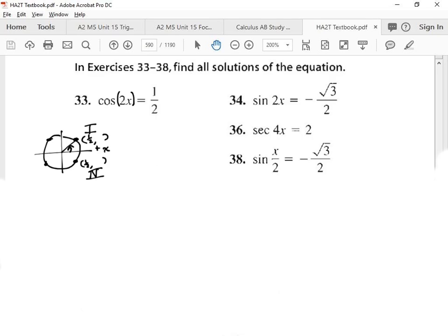Pi over 3. That's very nice. Pi over 3. That's pi over 3. And what is this one? All the way around. What is that? 7 pi over 3.